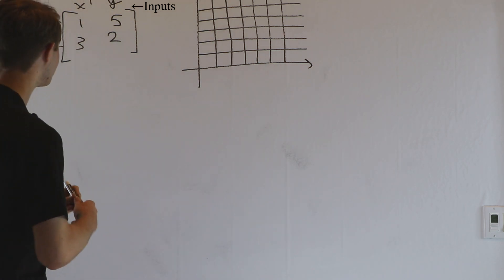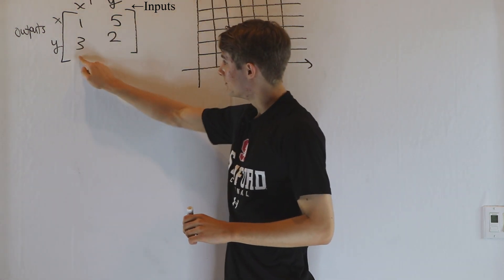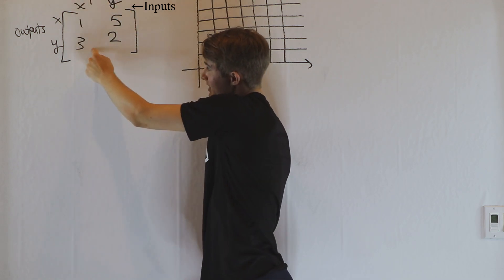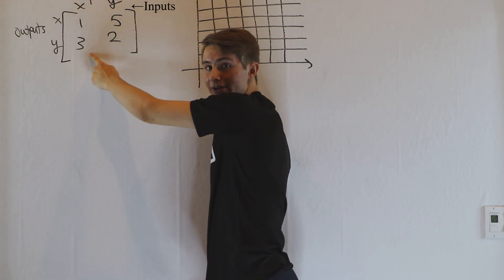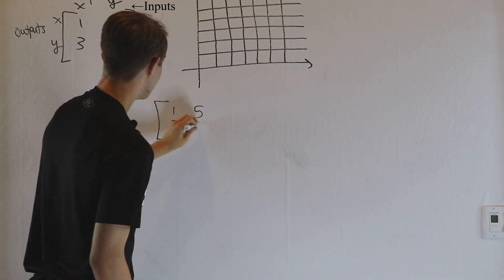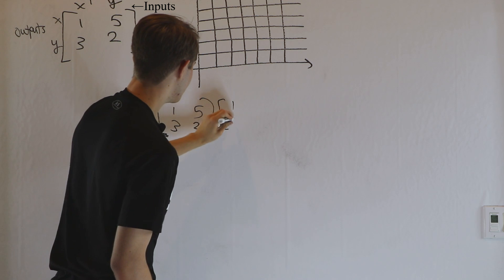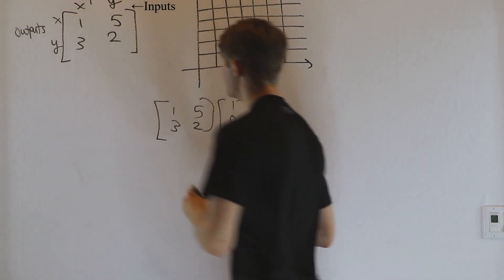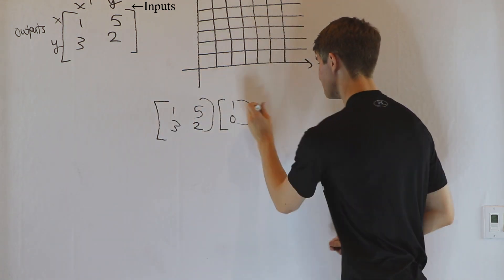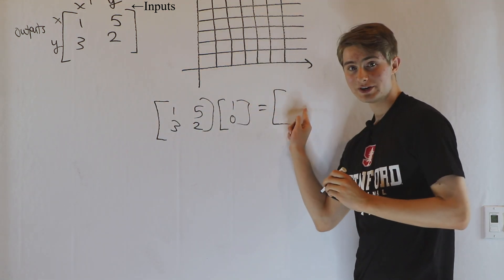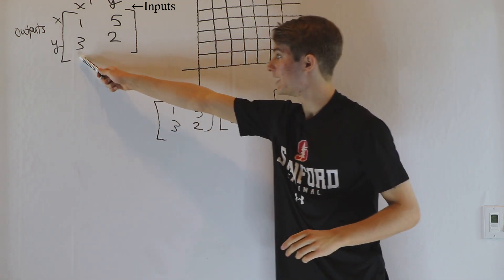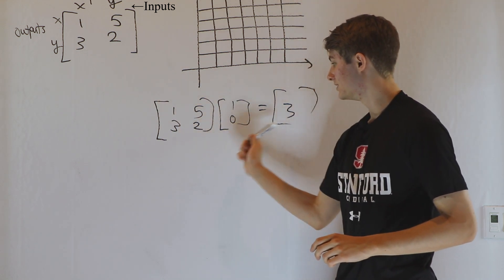So for example, if we want to look at the first column, second row — this three right here — what this three is saying is that for every x input, we're going to get a y output of three. For example, if we want to multiply this matrix by the vector [1, 0], so we're just looking at an x input, we know for every x input we're going to get a y output of three. So the y value of our result vector is going to be three.